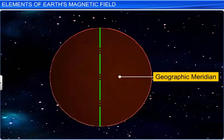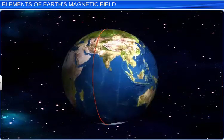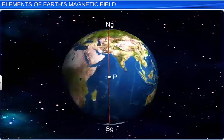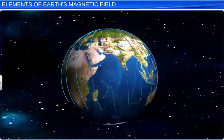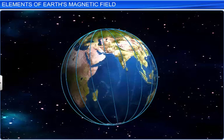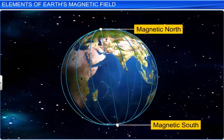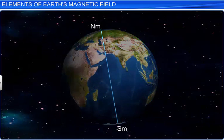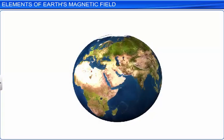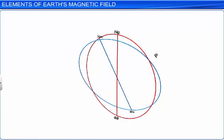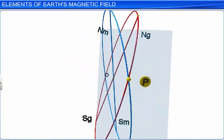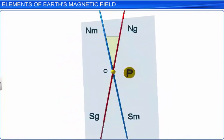The geographical meridian, when viewed from top, appears to be a straight line. Similarly, we can obtain the magnetic meridian by drawing a line from the magnetic north and south poles. This magnetic meridian also looks like a straight line when viewed from the top of the chosen point. At any given point, the geographical meridian and the magnetic meridian together look like two intersecting straight lines. The acute angle between these two straight lines is known as declination.